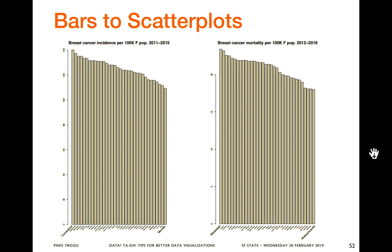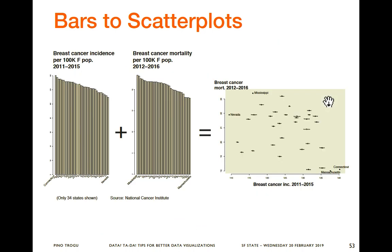These are bars for breast cancer incidence per 100 female population in 2011–15 and mortality for the same group in 2012–16. You can't really tell much difference because the scales are different. But if you make a scatter plot, things get more interesting. You take this bar chart and this bar chart and get one scatter plot — plotting incidence on the X-axis and mortality on the Y-axis.